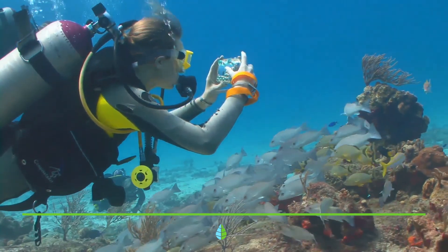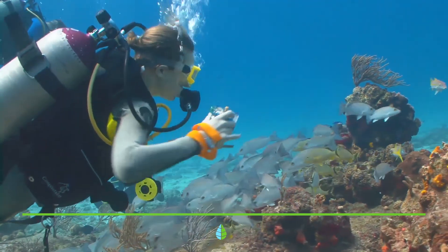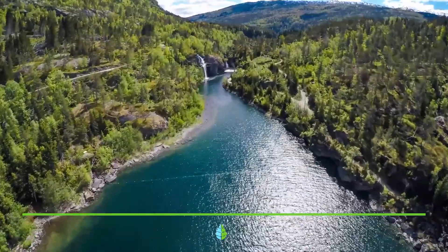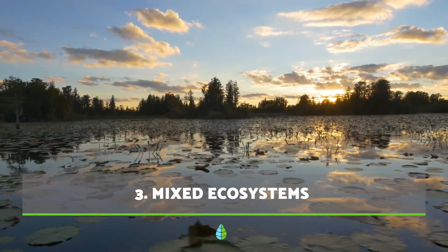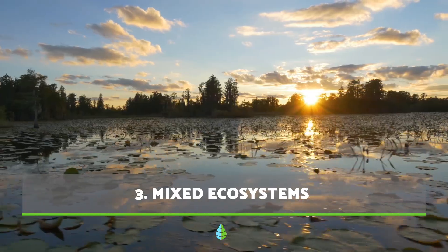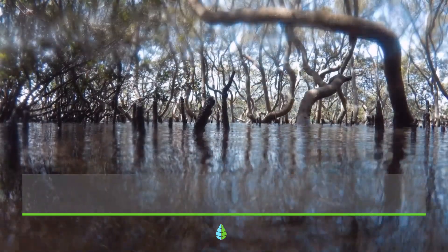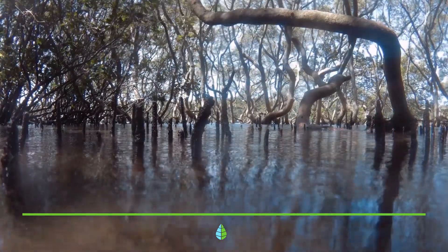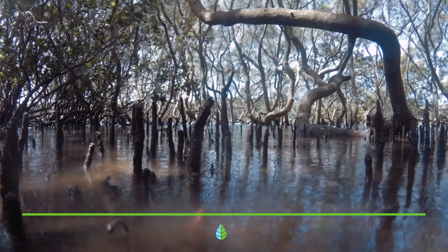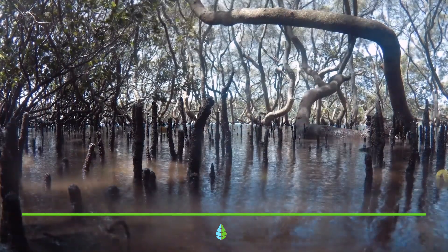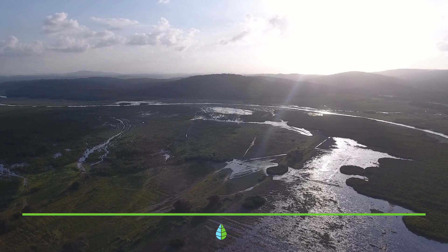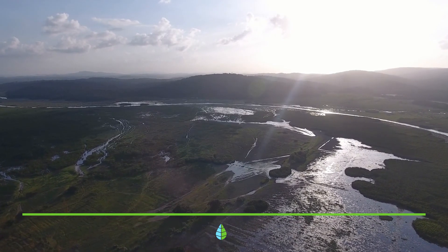Freshwater ecosystems include lakes, ponds, rivers, streams, and springs. Mixed ecosystems are those that are located between two different types of terrains, for example water and earth. The main types of mixed ecosystems are wetlands, mangroves, marshes, and coasts.